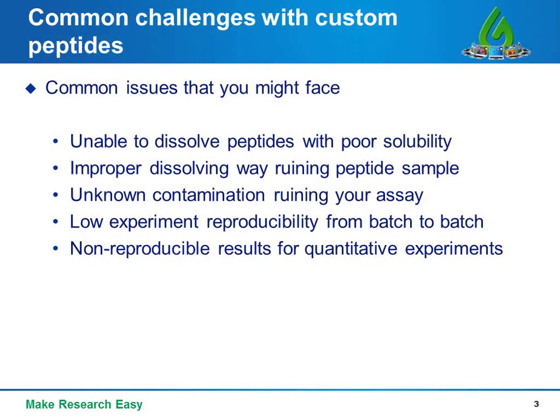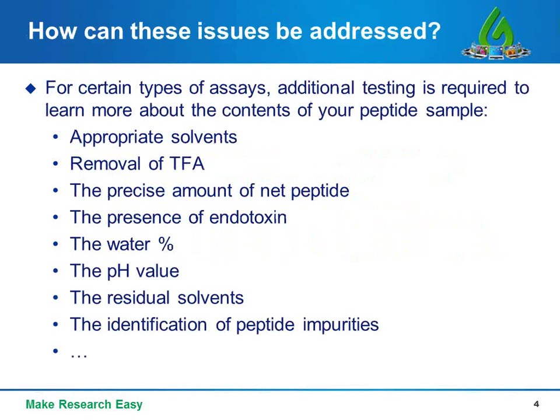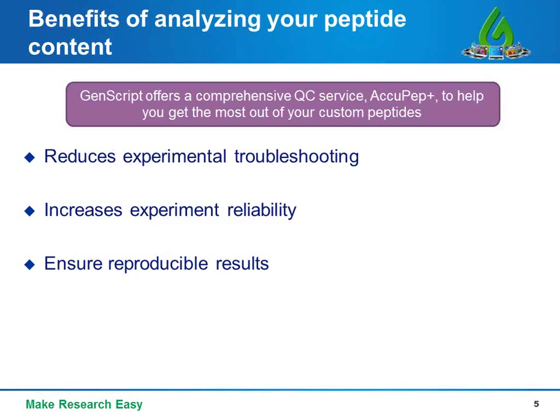Custom peptides play an important role in research, but knowing how to properly use them can be a problem. A common problem is poor solubility — sometimes peptides never seem to go into solution, and improper dissolving may completely ruin peptide samples. Unknown contamination can lead to unexpected results, ruined assays, and low batch-to-batch reproducibility.